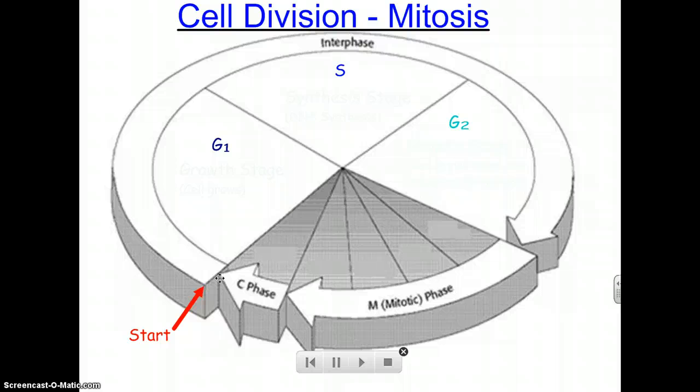The little baby cell grows up to be a teenage cell in G1. Are you following along on your computer? So, G1 is just a growth stage. The cell is literally just getting bigger. All its parts are getting bigger. Its cytoplasm is getting bigger, its nucleus is getting bigger. It's growing.